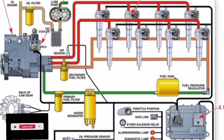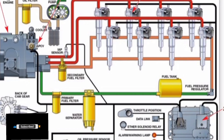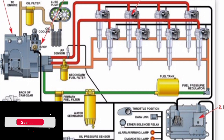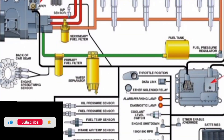The operation of the hydraulic electronic unit injector fuel system is completely different from any other fuel system. This fuel system consists of four basic components: the HEUI, the CECM, the unit injector hydraulic pump, and the fuel transfer pump.